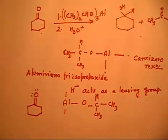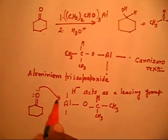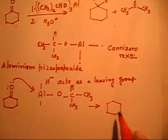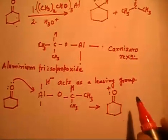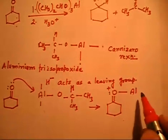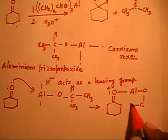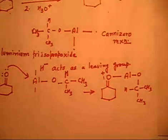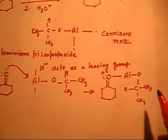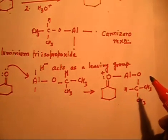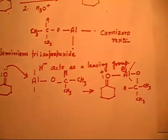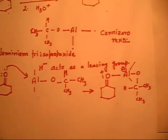Aluminum has two isopropoxide groups and one OH, with a hydrogen. When the lone pair of oxygen attacks, we get a complex: the carbonyl becomes C=O with a positive charge, and aluminum acquires a negative charge due to its additional bond. So we get a complex with aluminum having a negative charge.